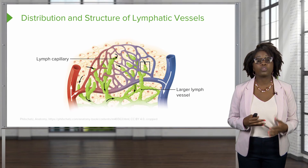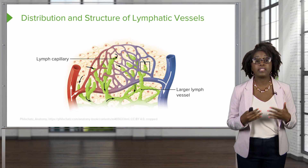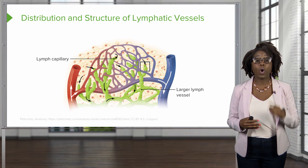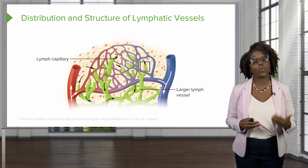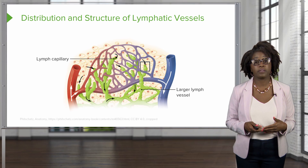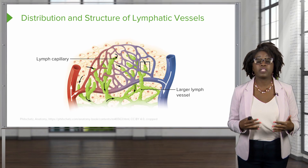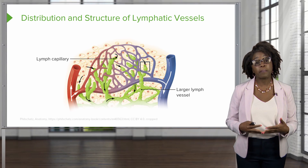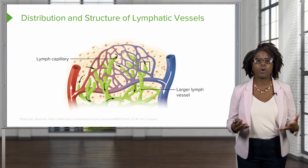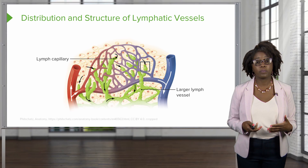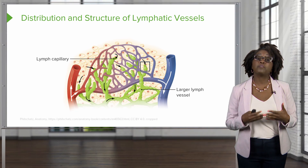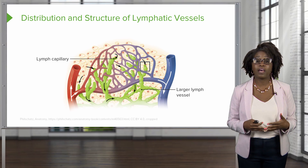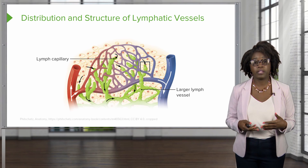Our lymphatic vessels are going to offer a one-way system ensuring that the lymph is going to flow in only one direction, and that is toward the heart. The lymph vessels, also referred to as the lymphatics, include lymphatic capillaries as well as larger lymphatic vessels. These blind-ended vessels are going to weave between the tissue cells and our blood capillaries.